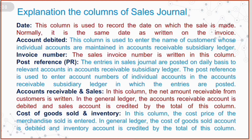Cost of goods sold and inventory: In this column, the cost price of the merchandise sold is entered. In the general ledger, the cost of goods sold account is debited and the inventory account is credited by the total of this column.